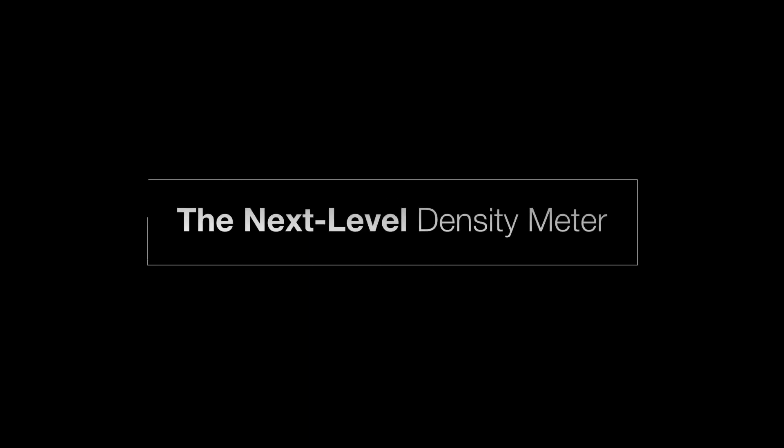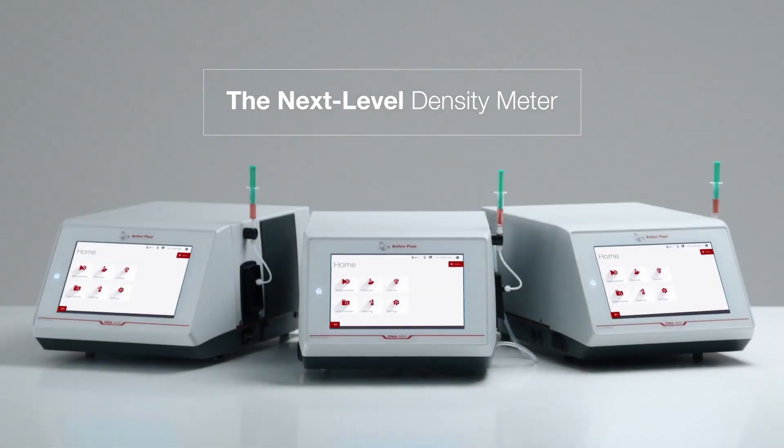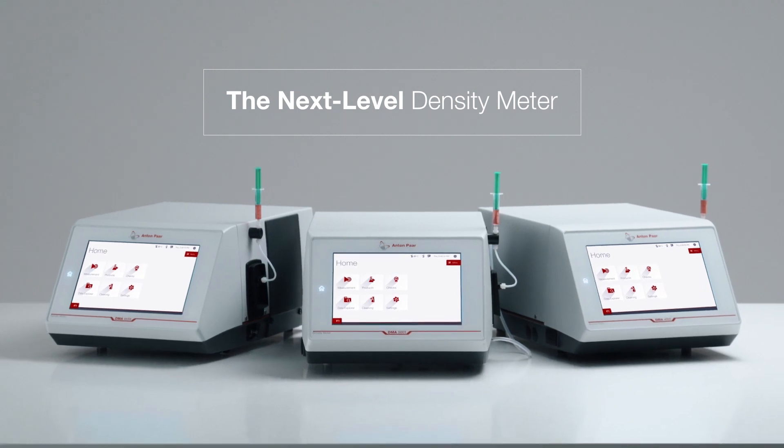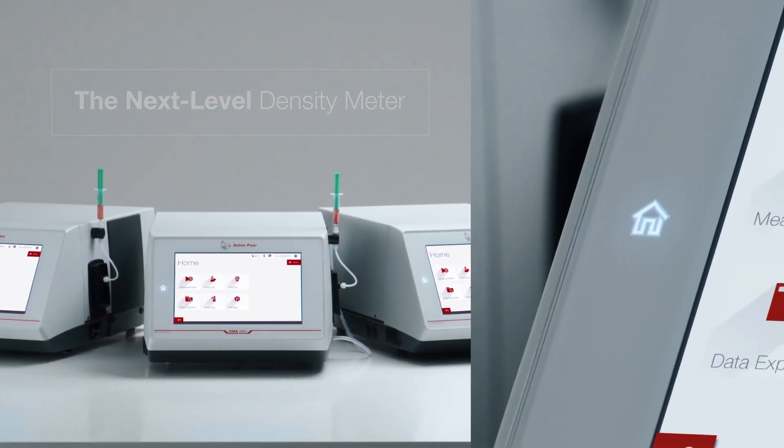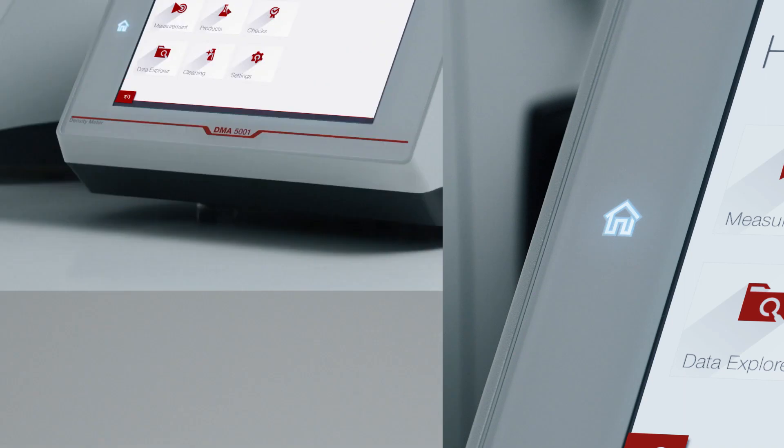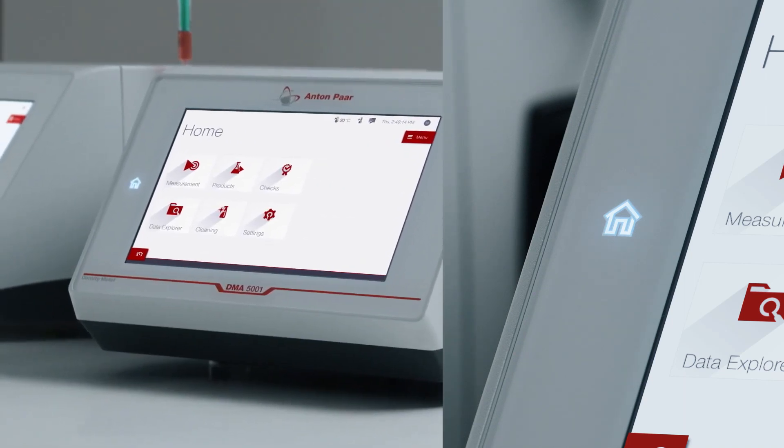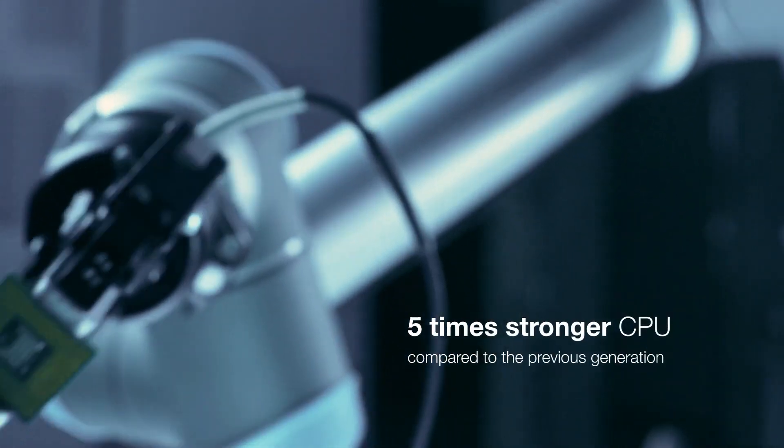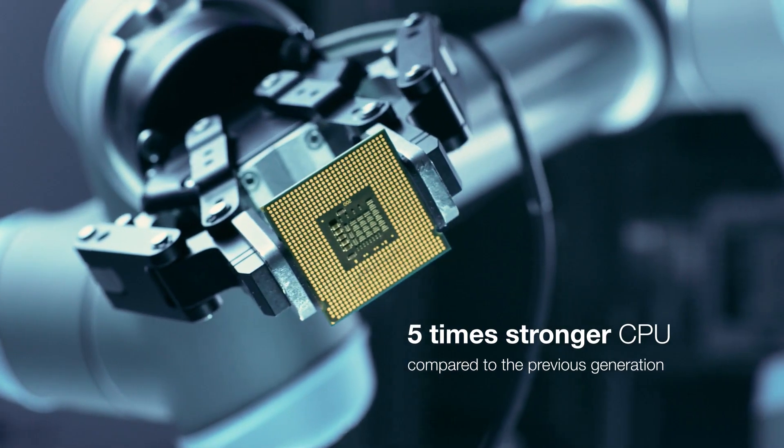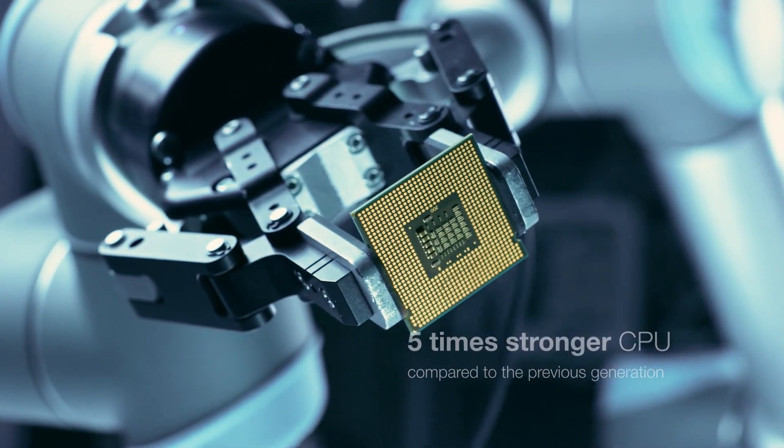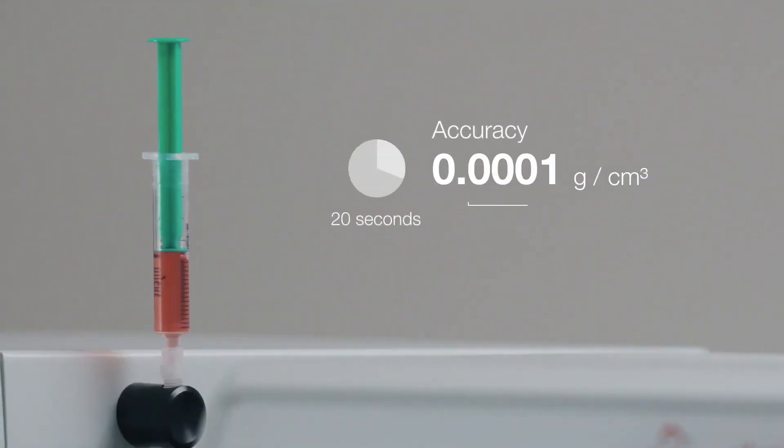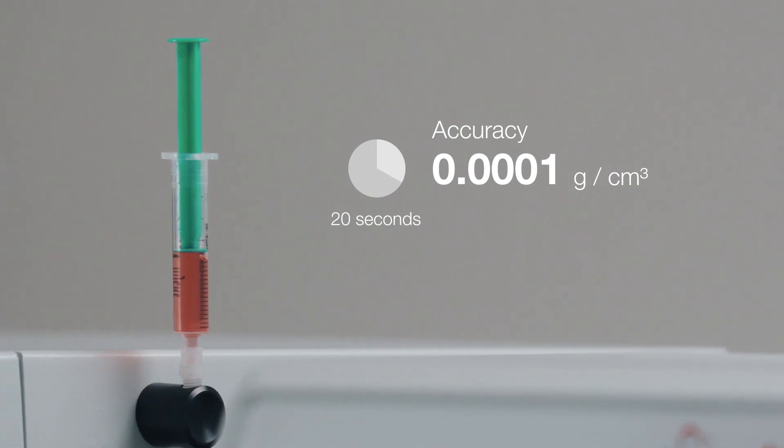Today we introduce a new generation of high-end density meters. Powerful, accurate, user-friendly. A density meter with a five times stronger CPU and a ten times faster operating system, delivering four digit accuracy in only 20 seconds and six digits with the high-end model.